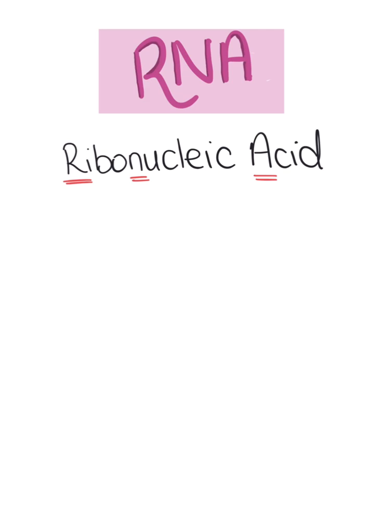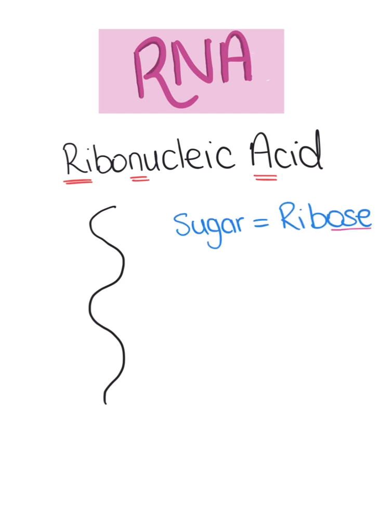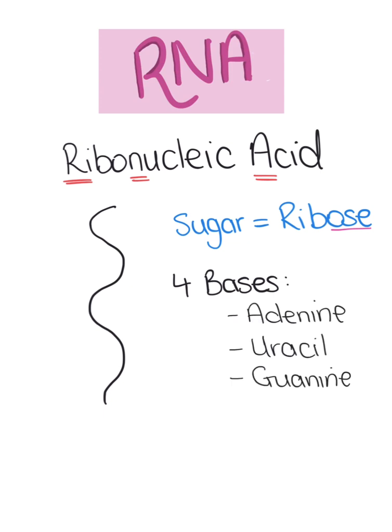Unlike DNA, RNA is made up of a single strand. Another difference of RNA to DNA is that RNA contains the sugar ribose. RNA also consists of four bases. The four bases present in RNA are adenine, uracil, guanine and cytosine.